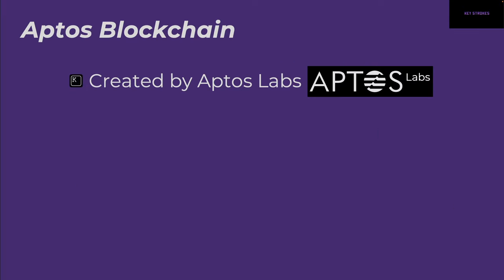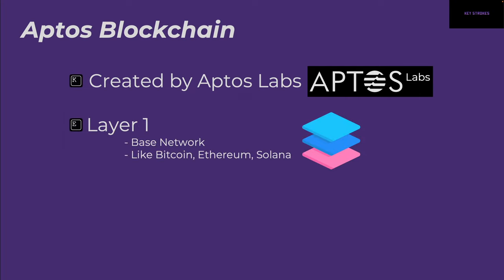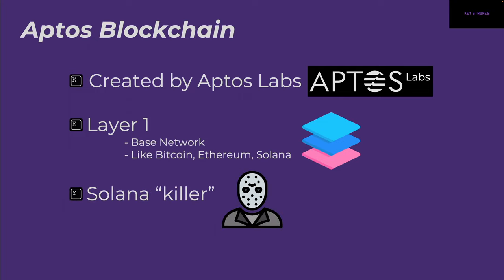So what is the Aptos blockchain? It was created by Aptos Labs. It's a layer one blockchain — if you don't know what layer one means, it's basically the base network, meaning it's its own blockchain and it's not piggybacking on any existing blockchain. It's very similar to Bitcoin, Ethereum, and Solana — they're all layer one. And the word on the street is that this is the Solana killer, so let's keep an eye on Aptos.